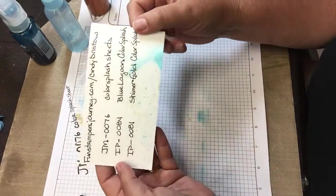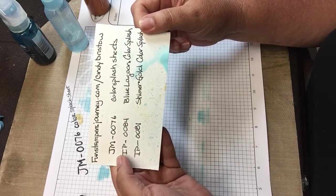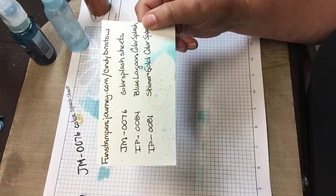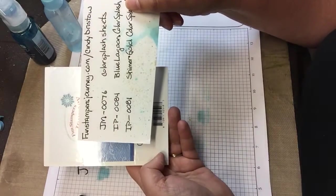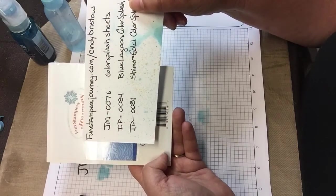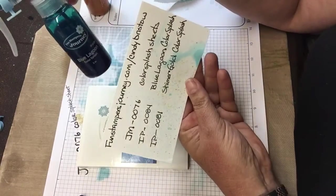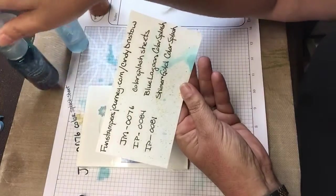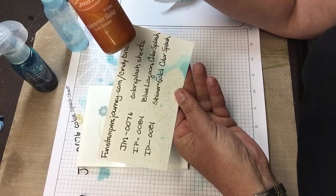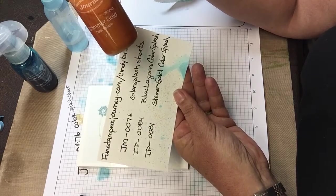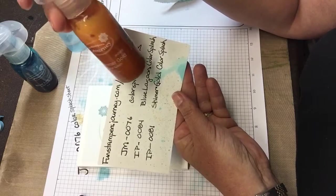Here again, you can order your own at funstampersjourney.com/cindybristow. The color splash sheets which are 140 pound cold press are item number JM-0076. The blue lagoon is IP-0084, and the gold shimmer is IP-0081.